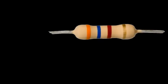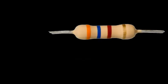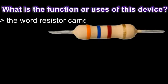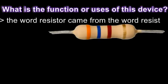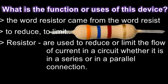If you are not familiar with resistors or don't have any idea, I'll show you a picture as an example. This is a carbon type resistor. What is the purpose of a resistor in a circuit? Simply put, the word resistor came from the word resist. Resistors are used to resist — that is, to reduce or limit the flow of current in a circuit.